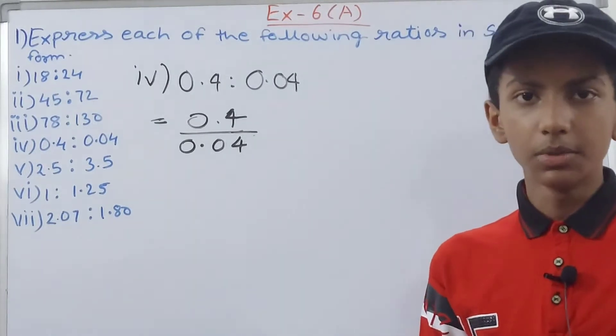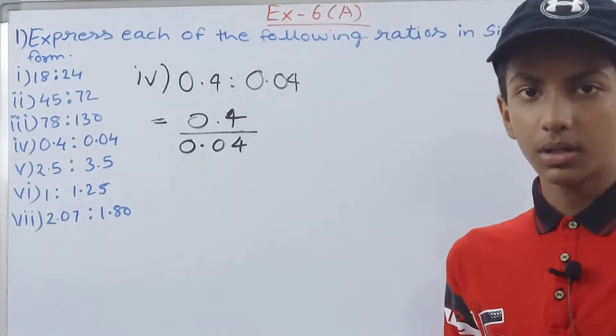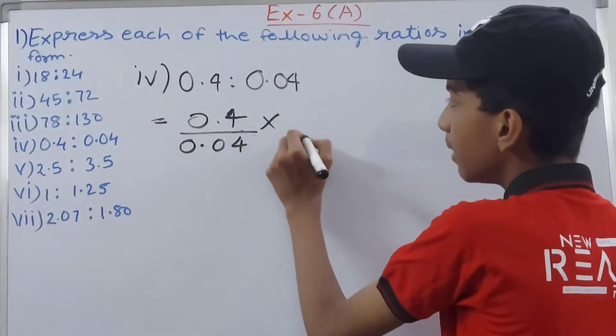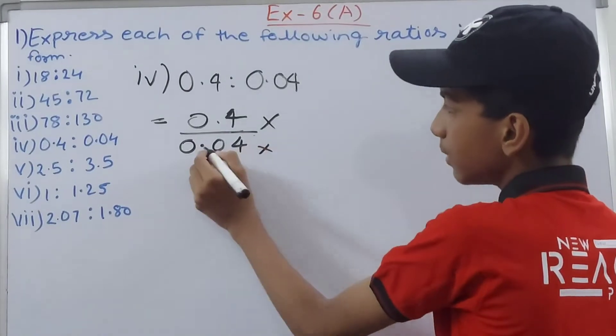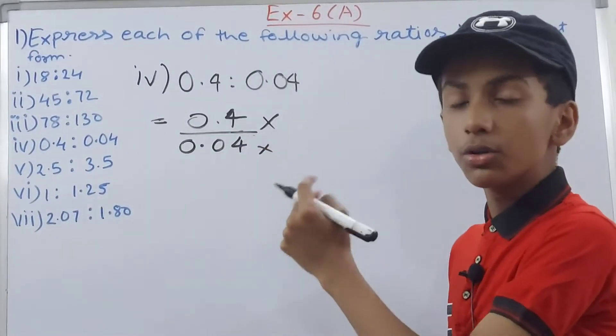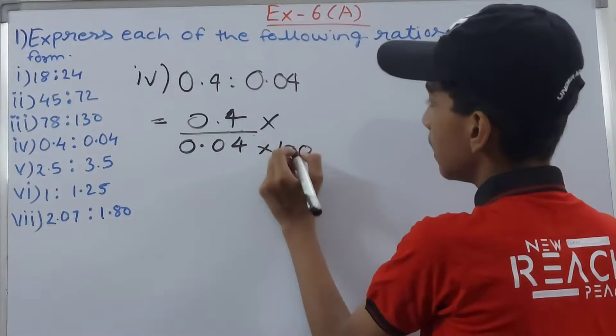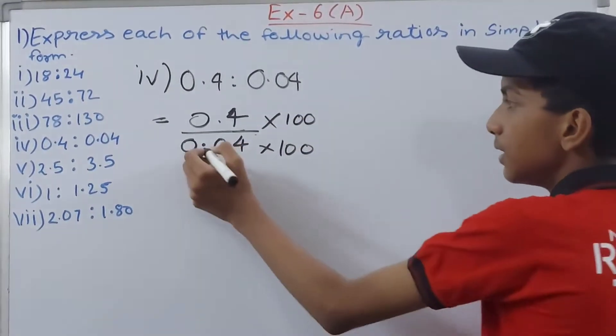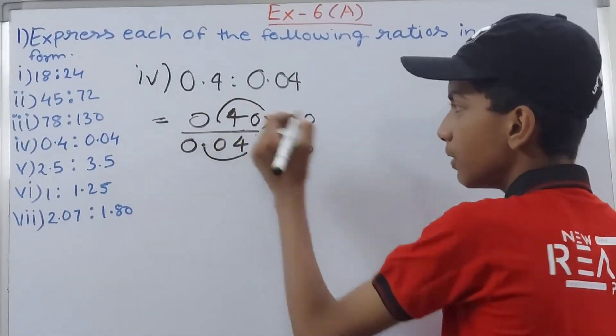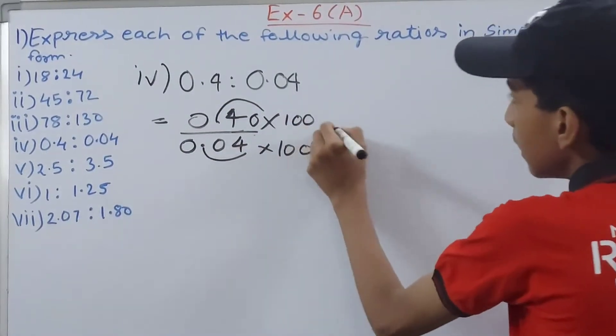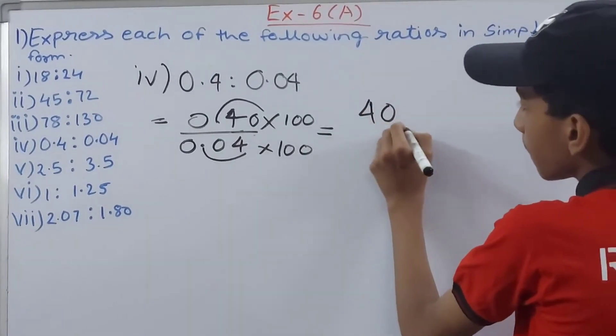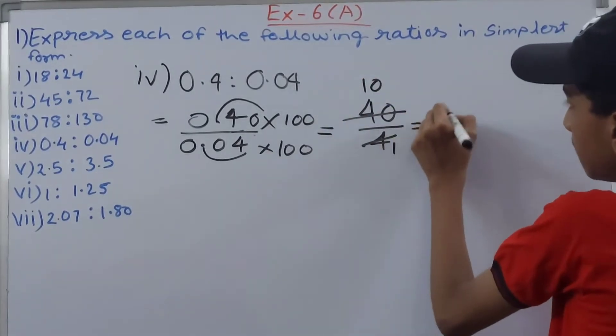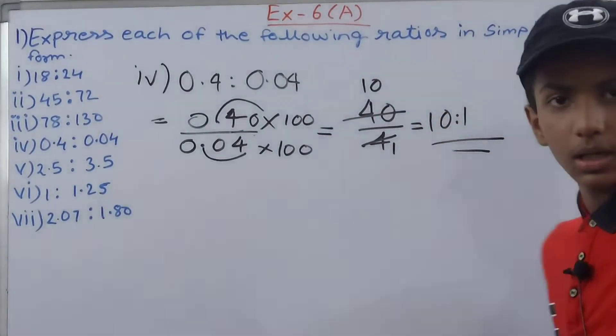So what we will do is basically we have to remove the decimal point from our numbers, numerator and denominator. So what we will do: multiply it—two zeros are there, so two decimal places, so two zeros, so 100. And here also we'll multiply by 100 only. So we will get 40 upon 4. Cancel this, so you will get 10 is to 1. This becomes our answer.